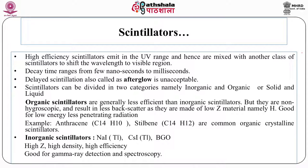Scintillators can be divided into inorganic and organic categories, or solid and liquid. Organic scintillators are generally less efficient than inorganic scintillators, but they are not hygroscopic — they don't absorb moisture — and result in less backscatter as they are made of low atomic number material. Examples are anthracene and stilbene as organic crystalline scintillators. Among the most popular inorganic scintillators are sodium iodide activated by thallium, cesium iodide activated by thallium, and bismuth germanate. They are high atomic number, high density, and therefore high-efficiency radiation detectors.